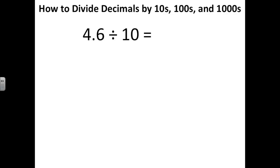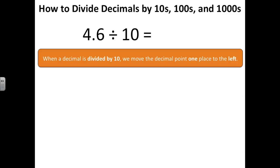4 and 6 tenths divided by 10. We learned that when a decimal is divided by 10, we move the decimal point one place to the left. So our answer is 46 hundredths.